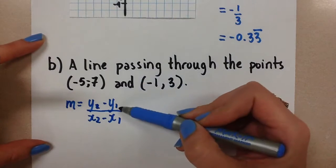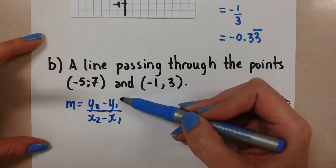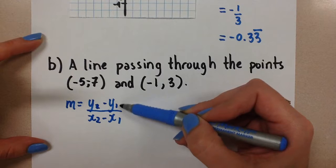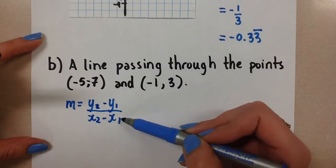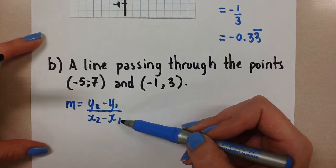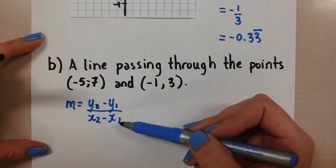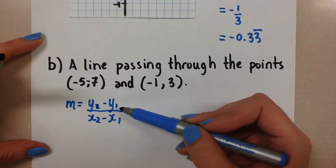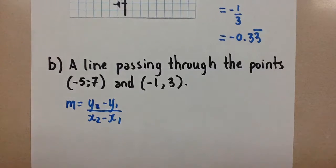And this formula just allows you to algebraically determine the difference in the y value, so that's the rise, and the difference in the x values, which gives you the run. So it's the same thing as the previous formula, we just have a template here to make sure that we use our points in the proper order.